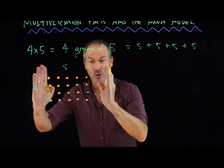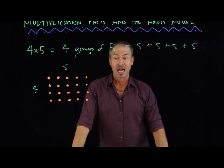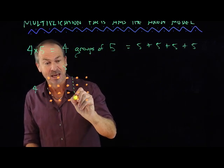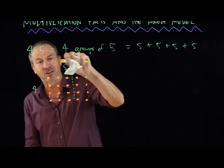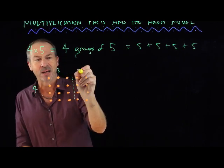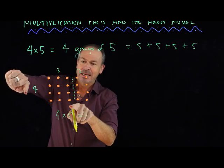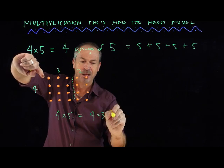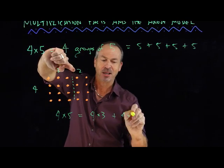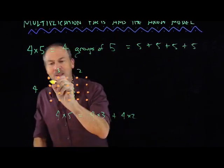Now the fun thing about this visual image here is I can actually start playing with it. For example, I could chop up this rectangular array. Maybe I'll do this. I might think of that 5 actually as 3 and 2. So now I'm seeing what I had was 4 times 5, but now I'm seeing it as this rectangular array, 4 by 3, plus this rectangular array, 4 by 2.